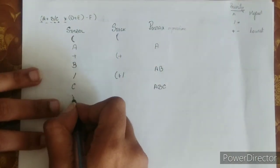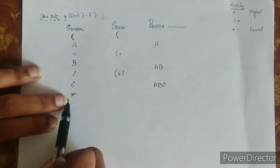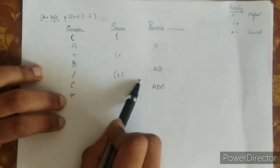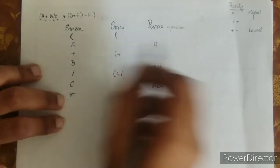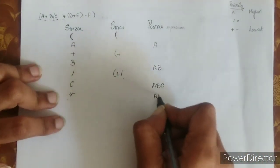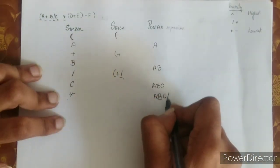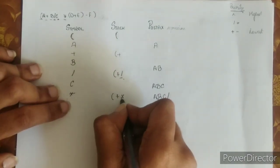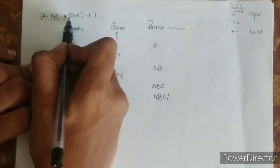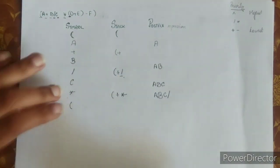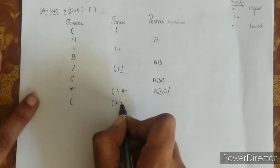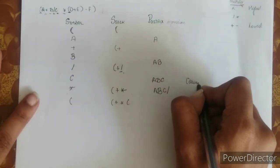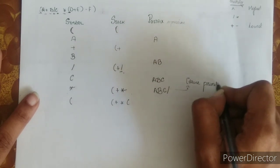Next is the multiplication operator. The operator in the stack and the input operator have the same priority. In that case, pop the element from the stack and add it to the postfix expression. So the division operator is popped and added — postfix becomes a, b, c, slash. Then push the multiplication operator into the stack. Next is a left parenthesis — push it into the stack.